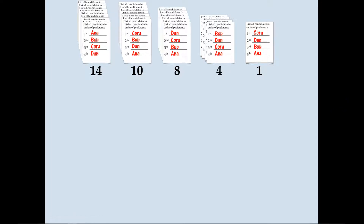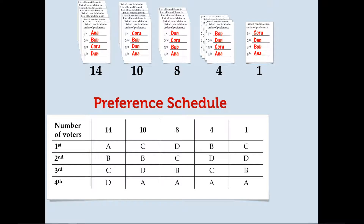The next thing you need to be solid on moving forward is something called a preference schedule. A preference schedule is a table that lists these piles in a nice organized table. Each of these columns represents a pile — for example, this pile represents what the 14 people preferred: A, B, C, and D, short for Anna, Bob, Cora, and Dan. Each pile corresponds to a column, and the rows represent the first, second, third, and fourth positions for each of the different piles.